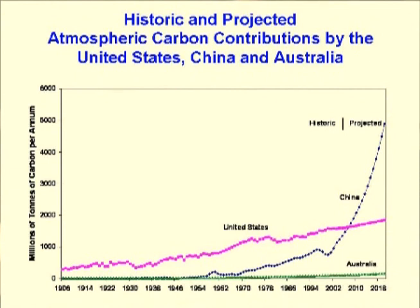This graph shows emissions of carbon to the atmosphere by the United States, China, and Australia, with historic data from 1906 to 2005 and a projection to 2020. Chinese emissions will overtake US emissions in 2008, and then double from the current level by 2016. Per capita emissions by the three countries will be equivalent by 2020.